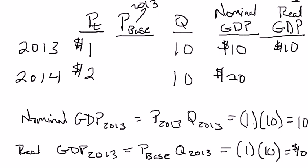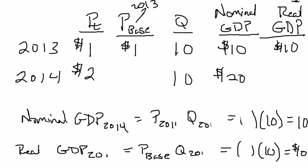The real change is going to happen when we calculate nominal and real GDP for 2014. Nominal GDP for 2014 is going to be the price from 2014 times the quantity from 2014. The price in 2014 is $2, so $2 per apple times 10 apples equals $20. That's the $20 we calculated right here.